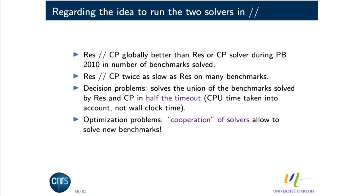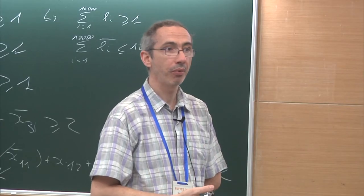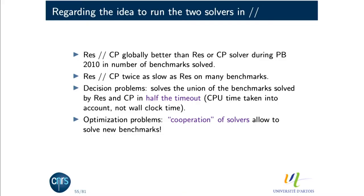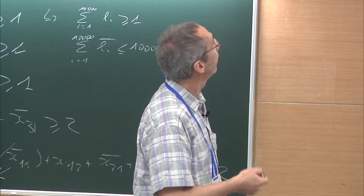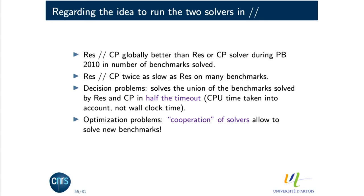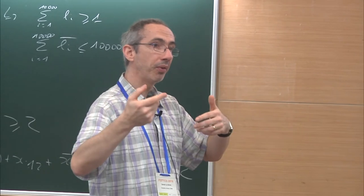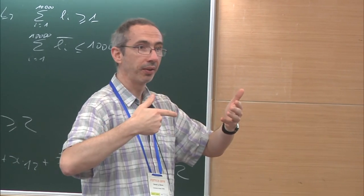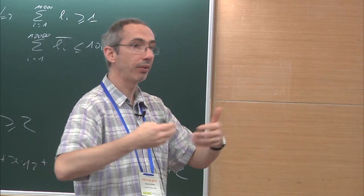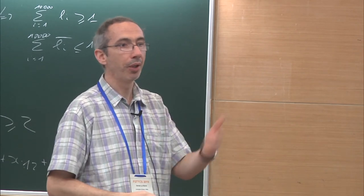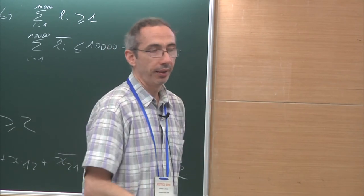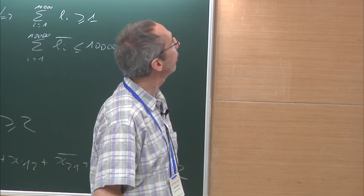In practice, companies using SAT4J to prove hard properties use the parallel version. It works better than either individual solver. If you don't know which to use, start with the resolution-based solver; if you need to prove optimality, use both in parallel. The parallel version also causes reproducibility issues due to concurrency.